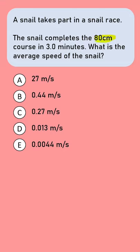A snail takes part in a snail race. The snail completes the 80 centimeter course in 3 minutes. What is the average speed of the snail?